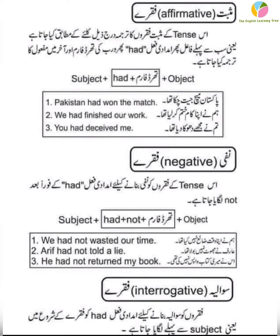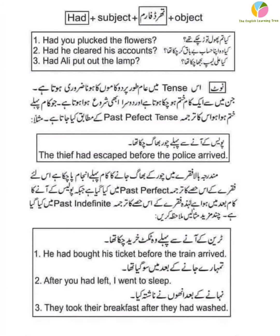Now let's move towards interrogative, that is, question sentences of the past perfect tense. To make sentences interrogative, the helping verb 'had' is placed at the beginning of the sentence, i.e., before the subject. The structure is: 'had' first, then the subject, then the third form of the verb, and the object at the end. For example: Had you plucked the flowers? Here 'had' comes at the beginning, 'you' is the subject, 'plucked' is the third form of the verb, and 'flowers' is the object.